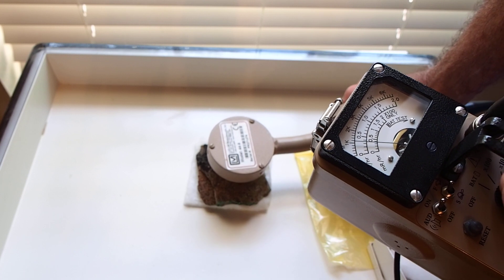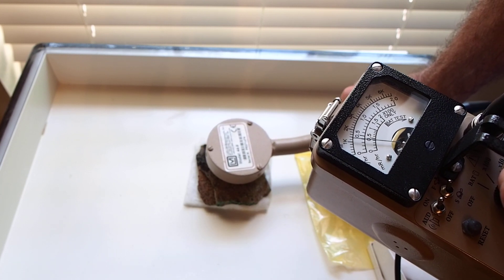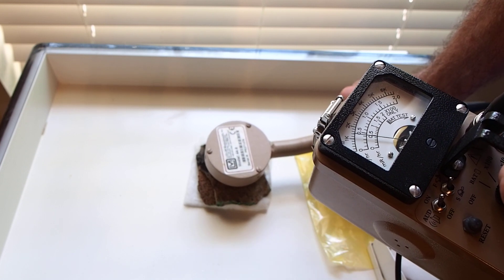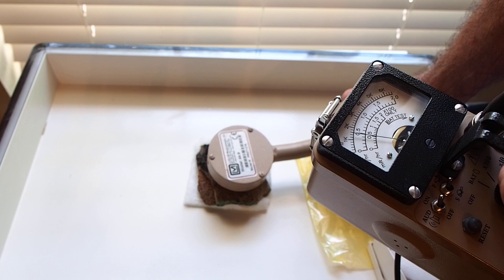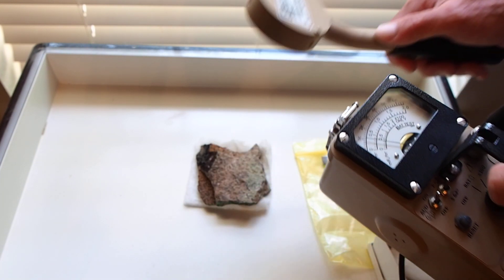There's other more specific tests that we can do to determine the count rate from beta only using a different detector, but we're not going to do that right now. So we've got about 1,500 counts per minute on the bland side of this rock.